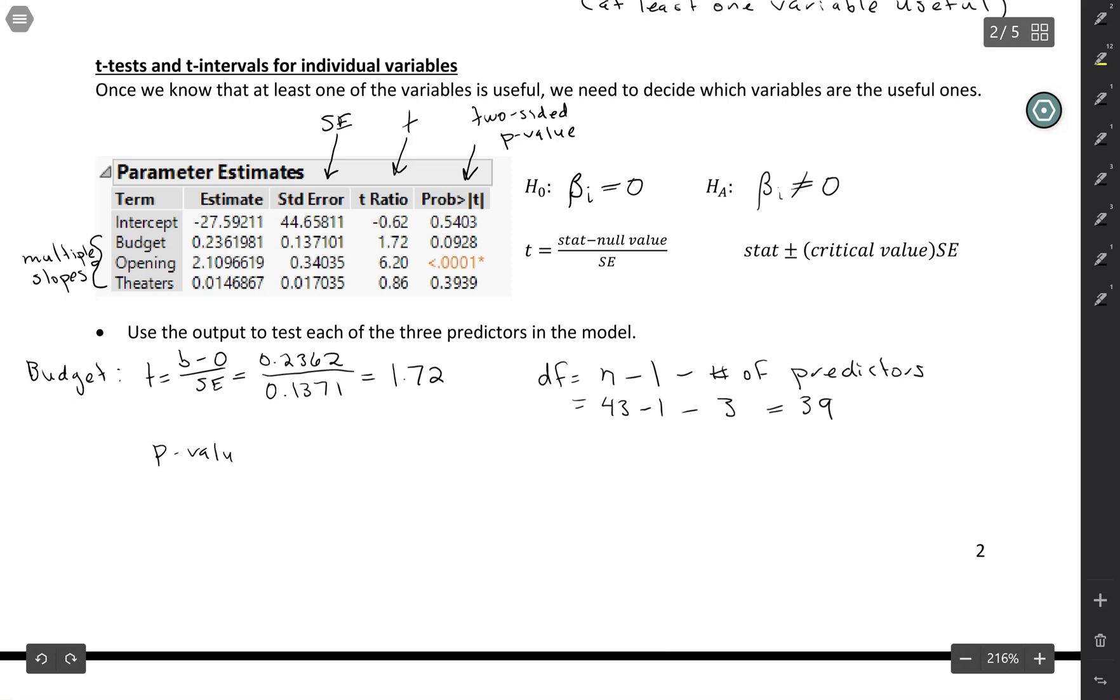Okay, so our p-value from the output, we'll just stick with that one, was .0928. So depending on what our alpha level is, I should have specified that. Let's say, use alpha is .05. If we had a .05 significance level, this p-value is larger than that. So this would be telling us that budget is not a significant predictor. Our p-value is too large here, so it is not a significant predictor of our response variable, which in this case is revenue, revenue for these movies.